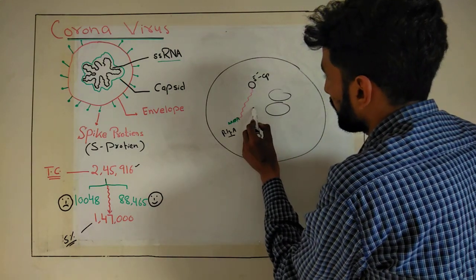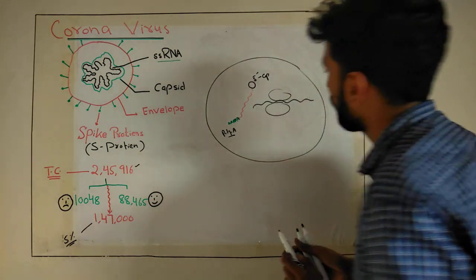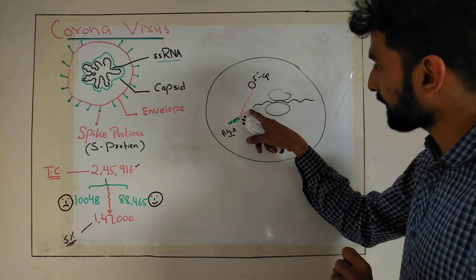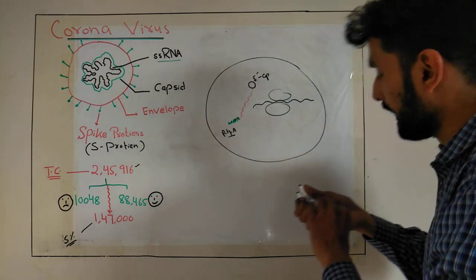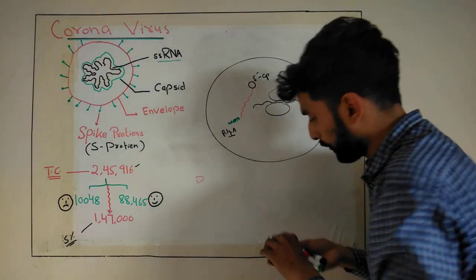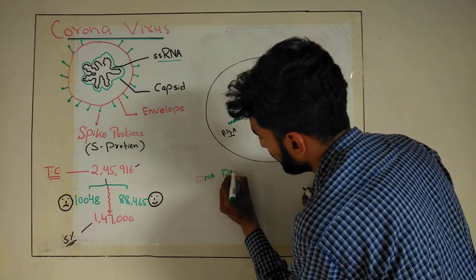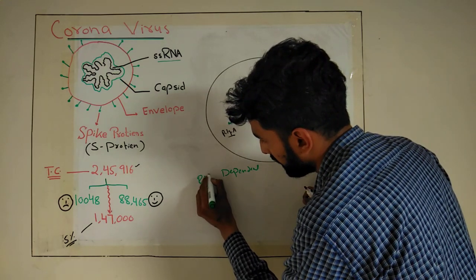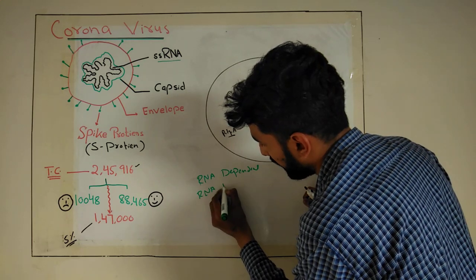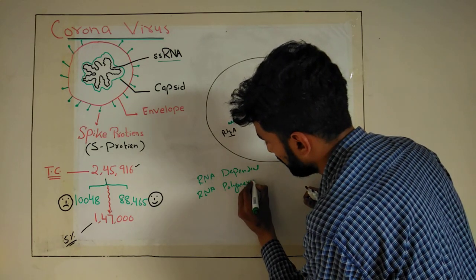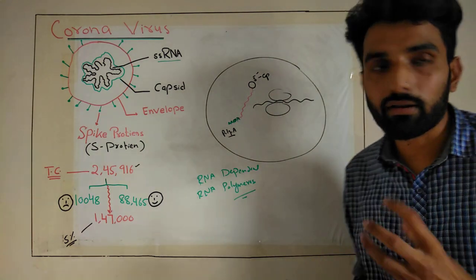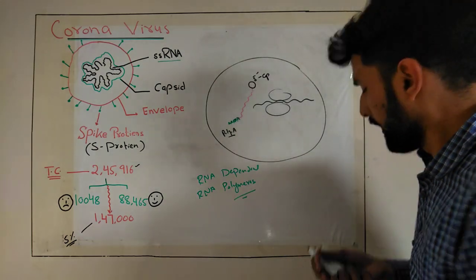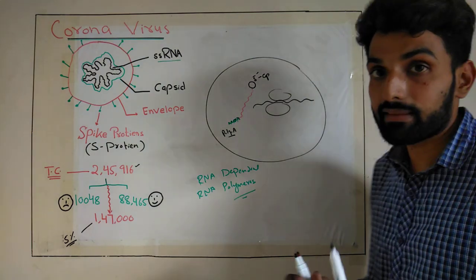This RNA will assemble itself on the ribosome for the production of protein. The first protein that will be produced by the translation of this whole RNA will be RNA-dependent RNA polymerase. The first enzyme produced from this translation process is RNA-dependent RNA polymerase.